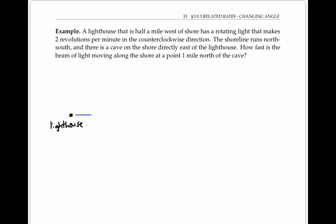A lighthouse that's half a mile west of shore has a rotating light that makes two revolutions per minute in the counterclockwise direction. The shore runs north-south, and there's a cave directly east of the lighthouse. How fast is the beam of light moving along the shore at a point one mile north of the cave?